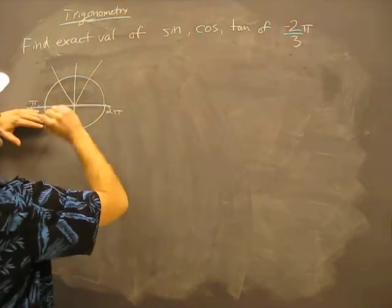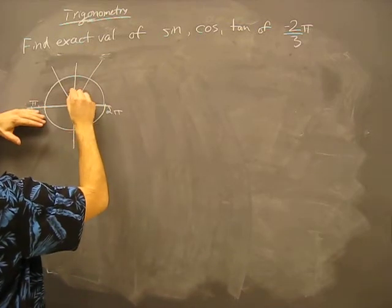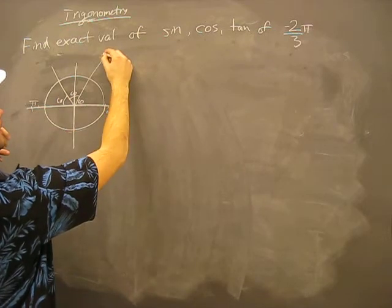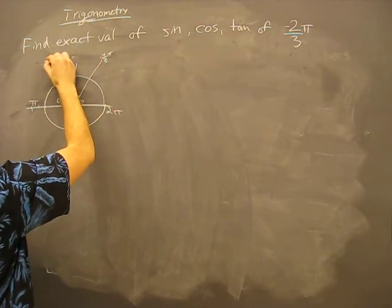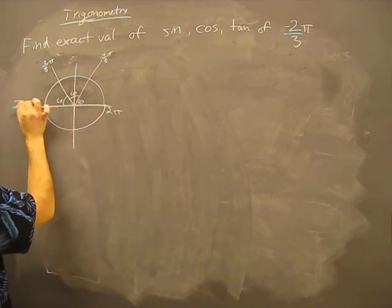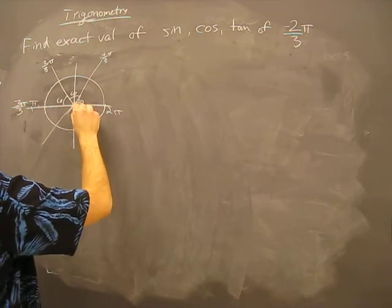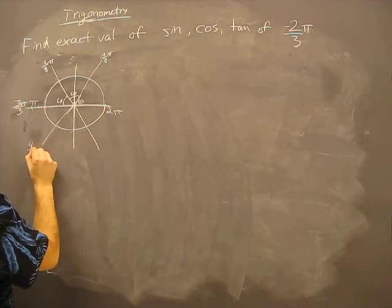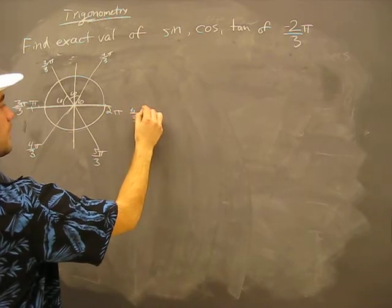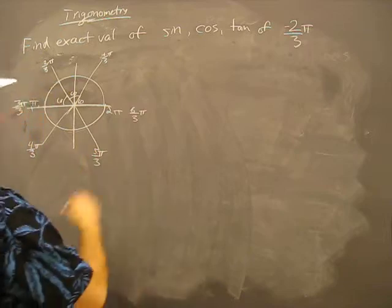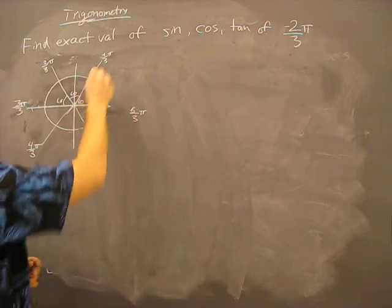One-eighty divided by three is sixty. So each section will be a sixty-degree angle. We'll have one-third pi, two-thirds pi, and three-thirds pi — which is the same as one pi. On the other side we keep going: four-thirds pi, five-thirds pi, and six-thirds pi, which is the same as two pi. So we have it all the way around in pi-thirds, and each section is sixty degrees.